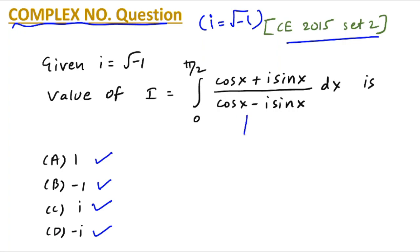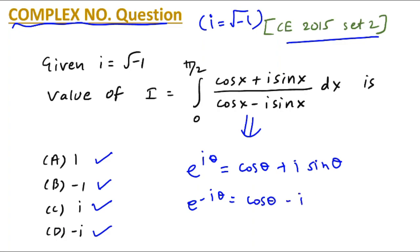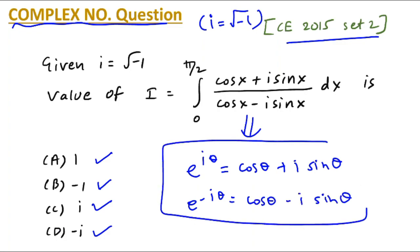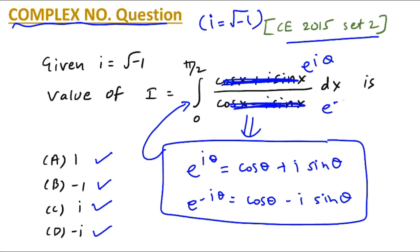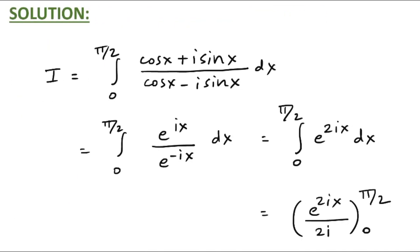Options: a: 1, b: minus 1, c: i, d: minus i. When you look at the cos plus i sine term, you should remember: e raised to iθ can be written as cos θ plus i sine θ, and e raised to minus iθ as cos θ minus i sine θ. These are the basics of complex numbers. Using this concept, the numerator becomes e raised to ix and the denominator becomes e raised to minus ix. Taking the denominator to the numerator gives e raised to ix times e raised to ix, which is e raised to 2ix.